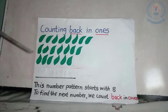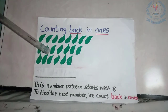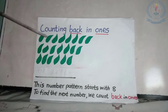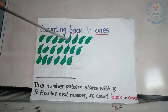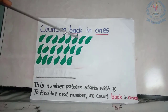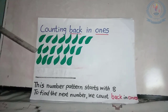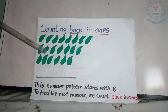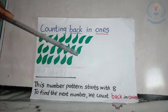What are these, children? Yes, they are leaves. Let's count them. In the first row: 1, 2, 3, 4, 5, 6, 7, 8. In the second row: 1, 2, 3, 4, 5, 6, 7.